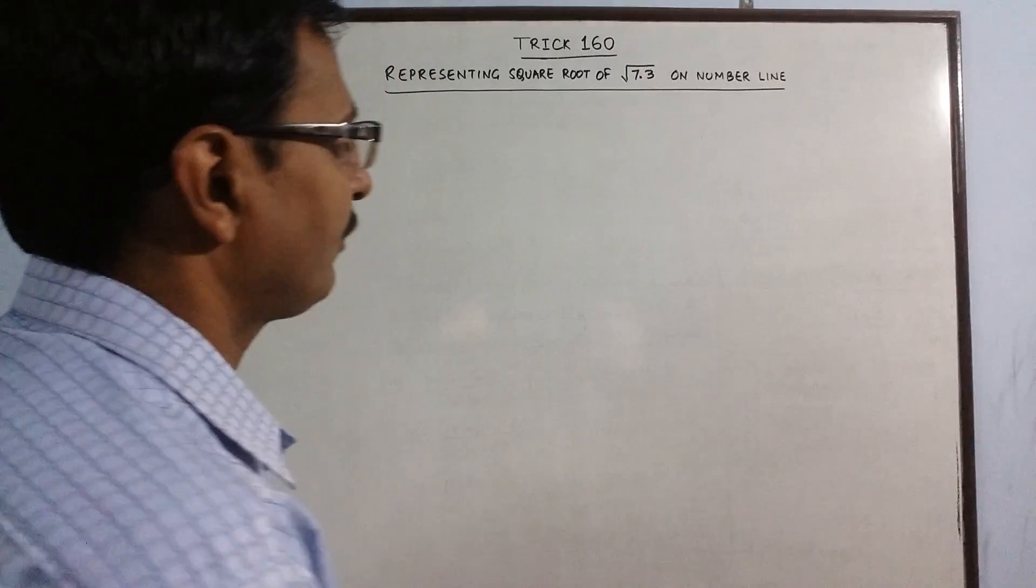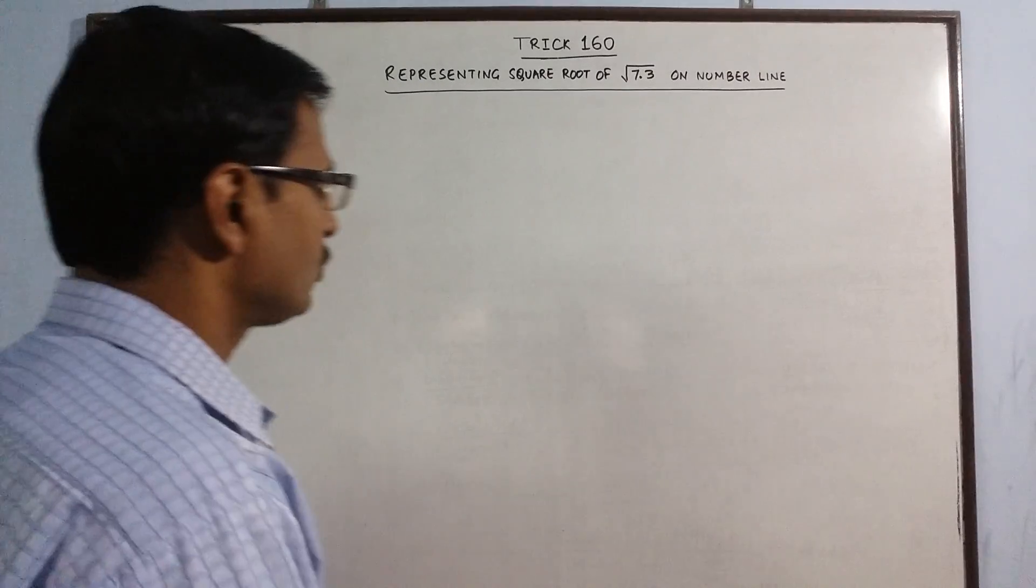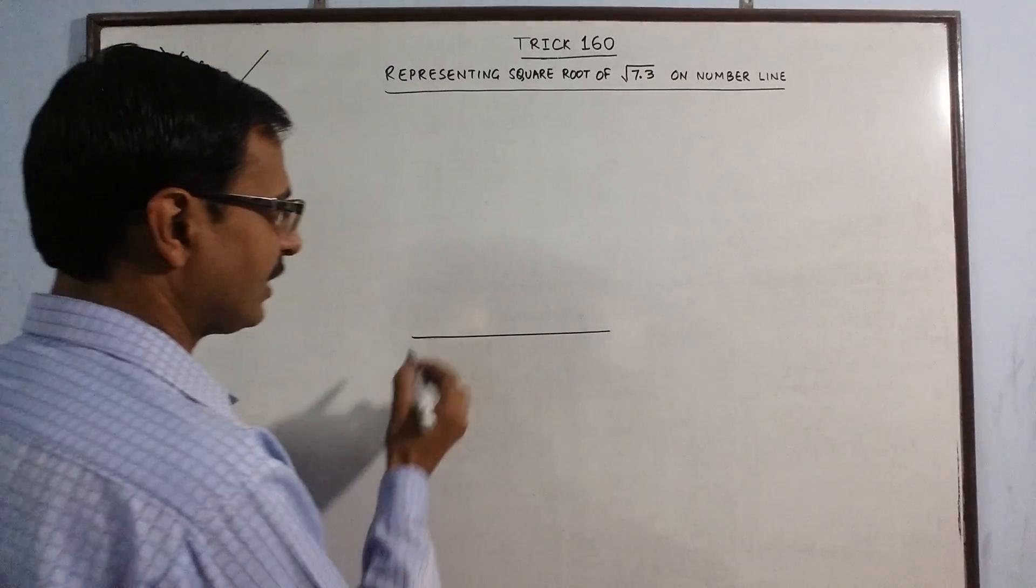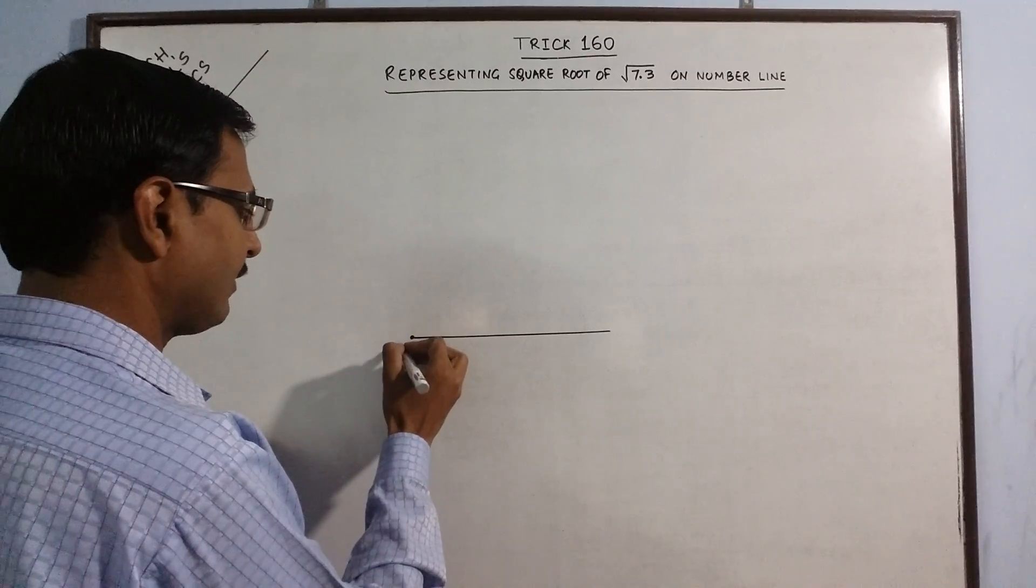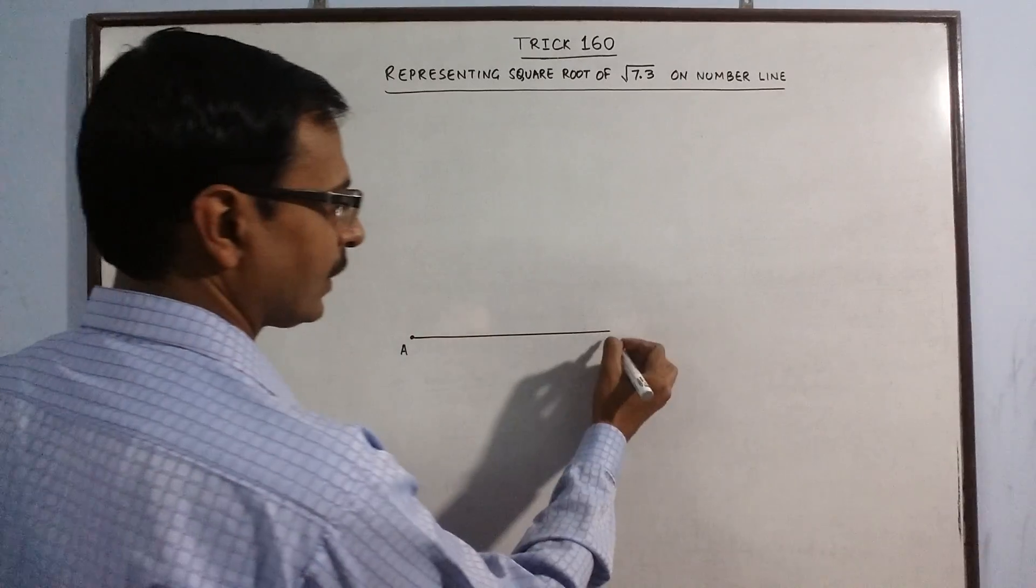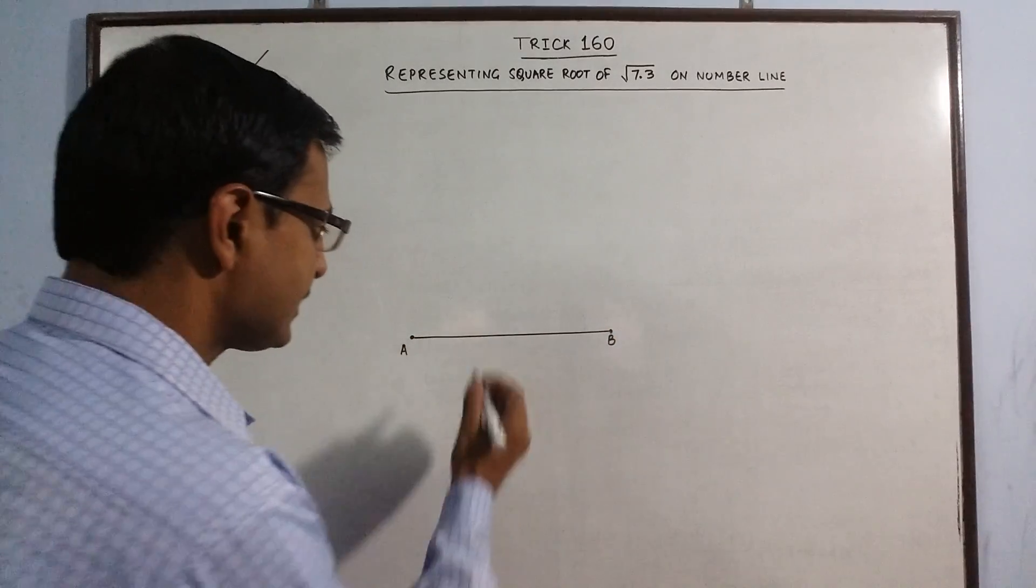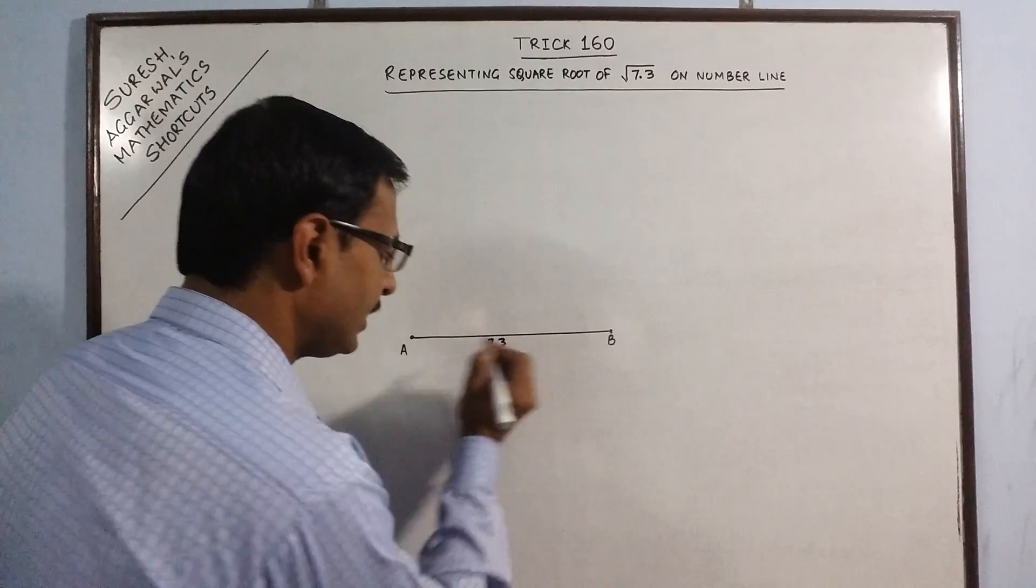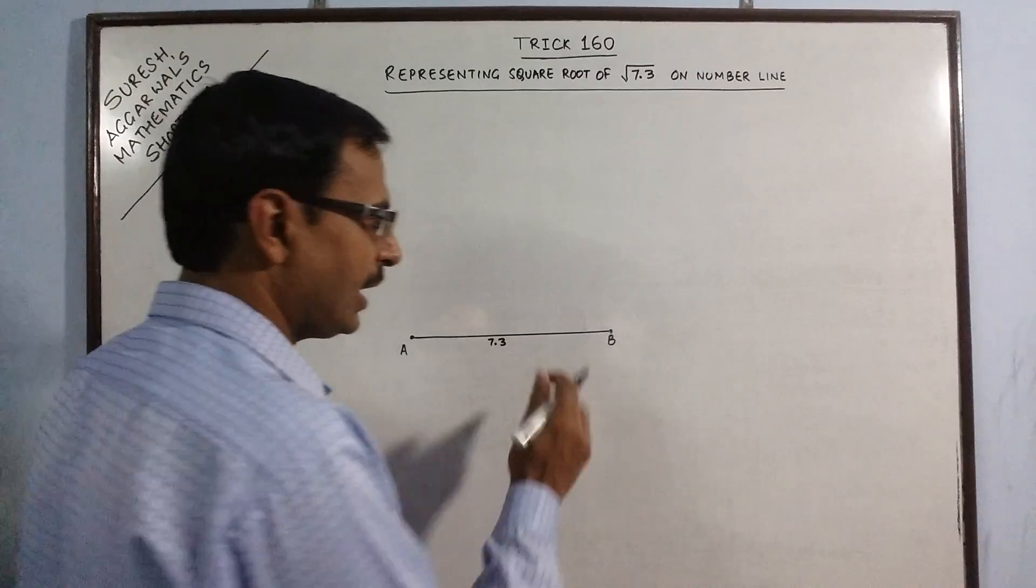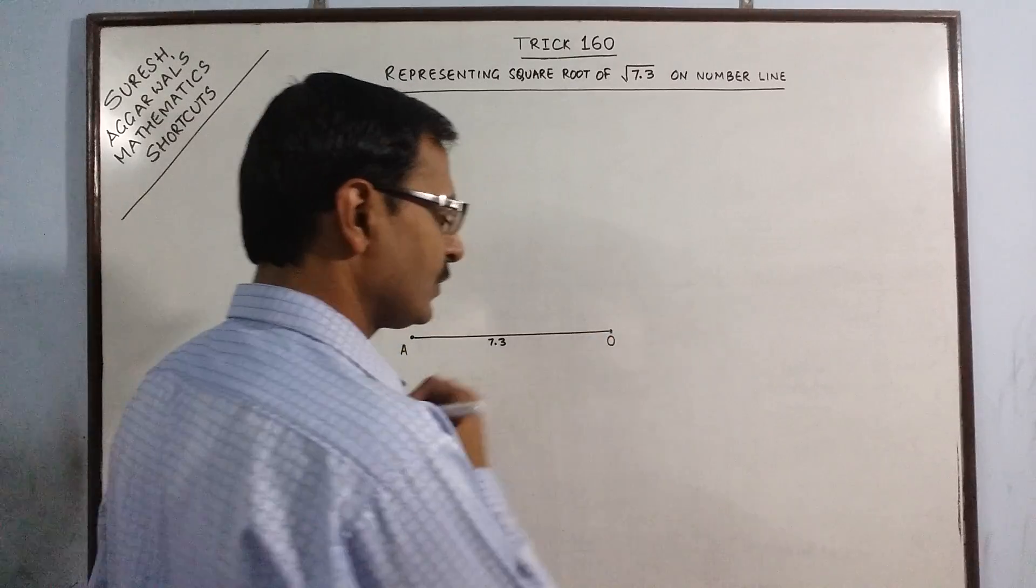First of all, whenever you have to represent the square root of a decimal number on a number line, you draw a line which is in length equal to that of the given number. This is the given line, I'll label this as AB. Now since this is 7.3, I will assume this point B as the origin O, so that we can understand this is the origin.